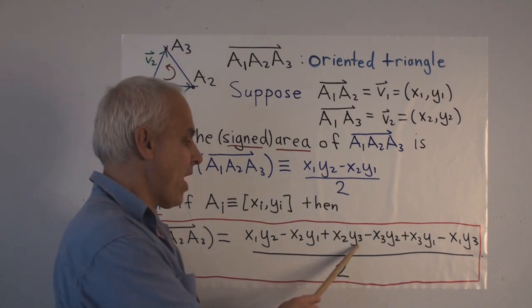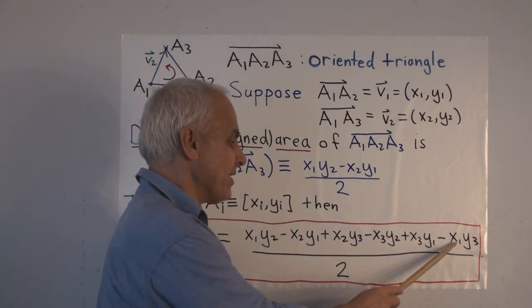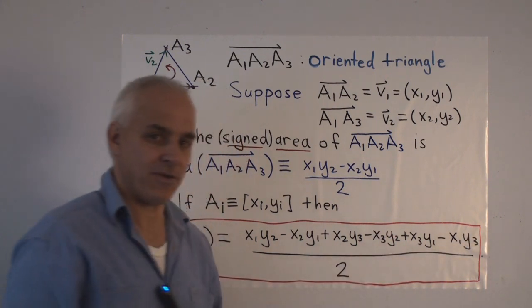Then X2, Y3, minus X3, Y2, those naturally go together. Plus X3, Y1, minus X1, Y3, those naturally go together.